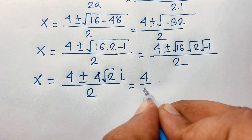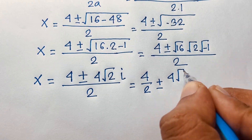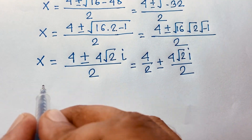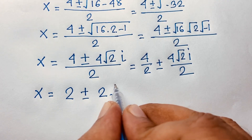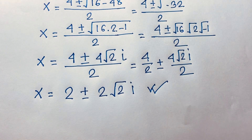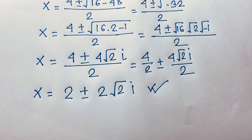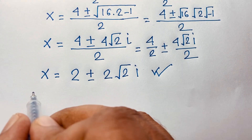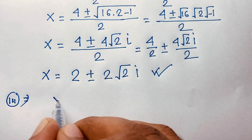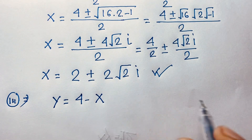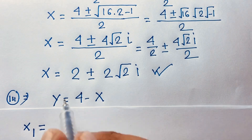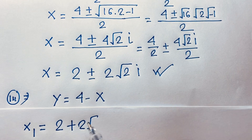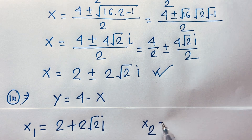Separating the fraction: x equals 4 over 2 plus or minus 4√2·i over 2, which simplifies to x equals 2 plus or minus 2√2·i. There is no real solution — this is a complex solution. So x₁ equals 2 plus 2√2·i, and x₂ equals 2 minus 2√2·i.